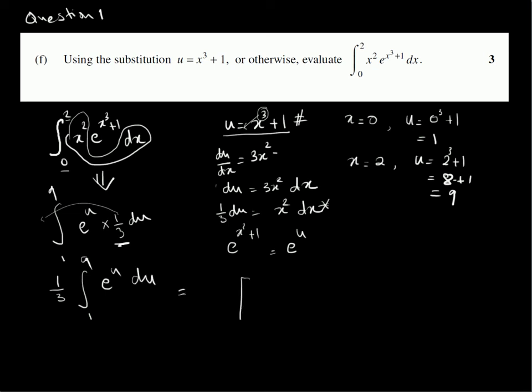This equals e to the u, square brackets from 9 to 1, with 1 third outside. And that's the same as 1 third e to the power of 9 minus e to the power of 1. So, you can write this as e to the power of 9 minus e over 3. And that's our final answer.